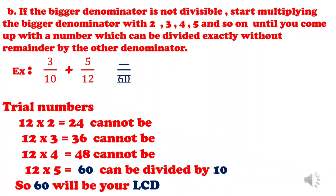So we start multiplying: 12 times 2 is 24 — cannot be divided by 10. 12 times 3 is 36 — still cannot be. 12 times 4 is 48 — still cannot be divided by 10. 12 times 5 is 60. Now, 60 can be divided by 10 because numbers divisible by 10 end in 0. So we will have 60 as our LCD. That's how to find the LCD using this method.